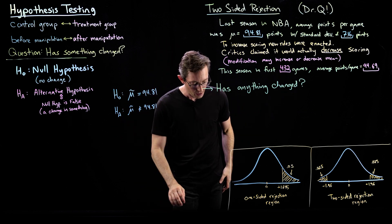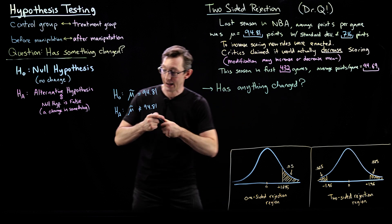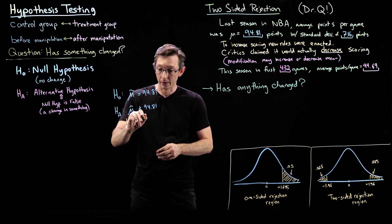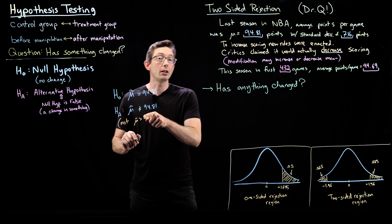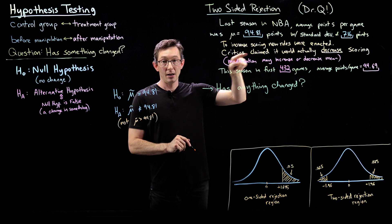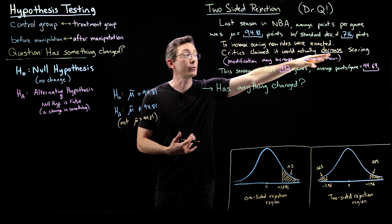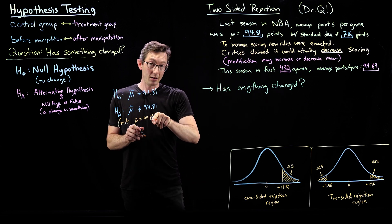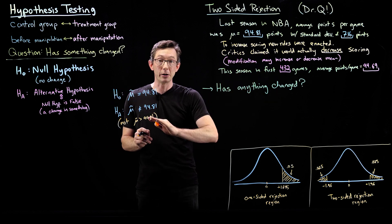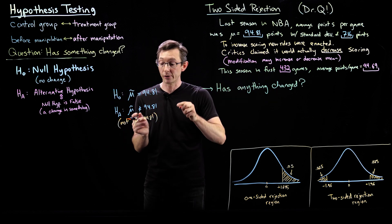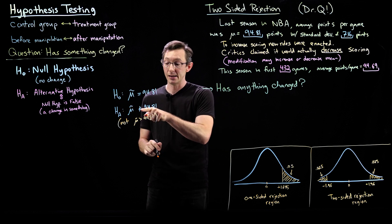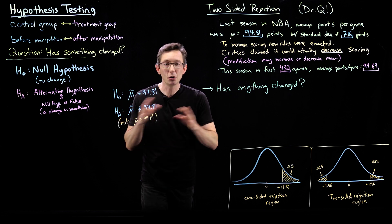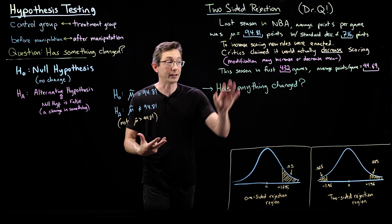Notice that the alternative hypothesis is not that mu tilde is greater than 94.81. That would be the null hypothesis if you're not listening to the critics. The critics say it might decrease the scoring. If everybody thinks it's going to increase the scoring, you might only test that mu is greater than 94.81. But because some people think it's going to decrease and have a plausible explanation for how it would decrease, we're actually testing this blue hypothesis. The null hypothesis is that the mean didn't change. That's usually the null hypothesis, that nothing changed, that there was no effect of your modification.